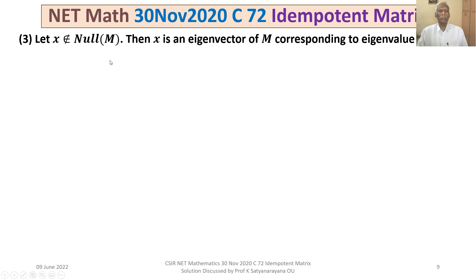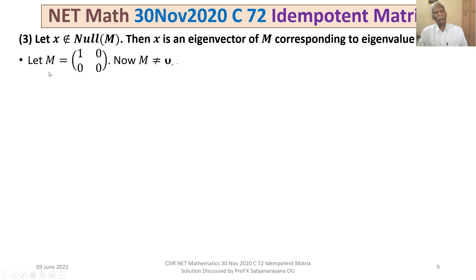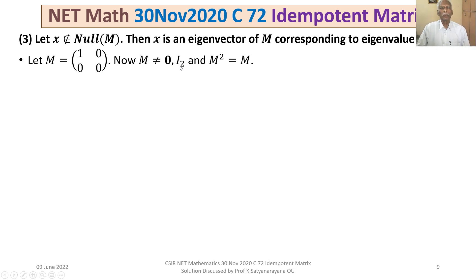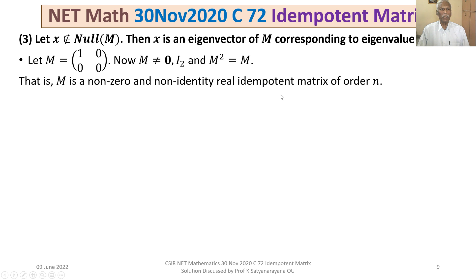Let M be the 2×2 matrix [[1,0],[0,0]]. M is not the zero matrix, M is not the identity matrix, but M² = M. So M is a non-zero, non-identity real idempotent matrix of order 2 (n = 2). We calculate the null space of M: it is the set of all (x₁, x₂)ᵀ ∈ ℝ² such that Mx = 0, giving x₁ = 0 and x₂ arbitrary.